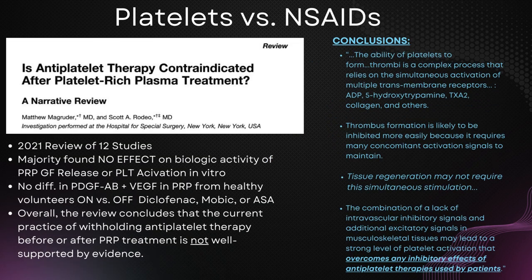Scott Rodeo dug in a little further in 2021, finding no effect of antiplatelet drugs on PRP in 12 papers meeting his criteria. Antiplatelet drugs studied included diclofenac, meloxicam, and aspirin. They proposed that the in vivo requirements for thrombus formation may be different from those required for tissue regeneration. He also suggested that the multiple excitatory signals found in musculoskeletal tissue may be a strong enough activation signal to overcome any inhibitory effects of antiplatelet therapies.